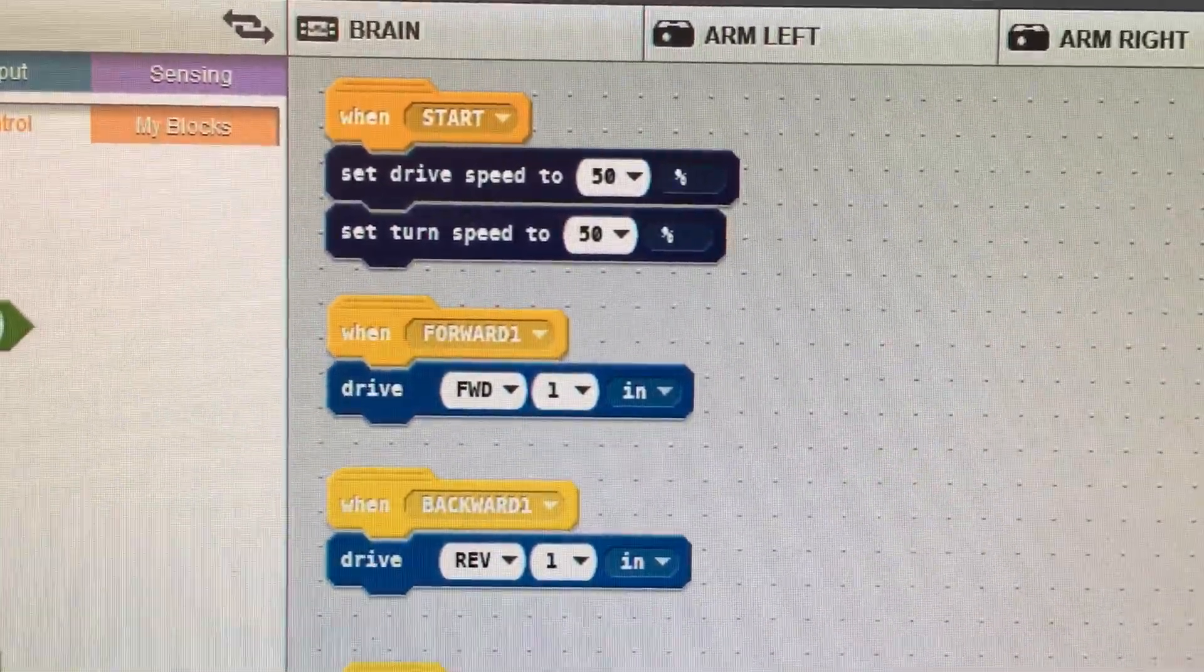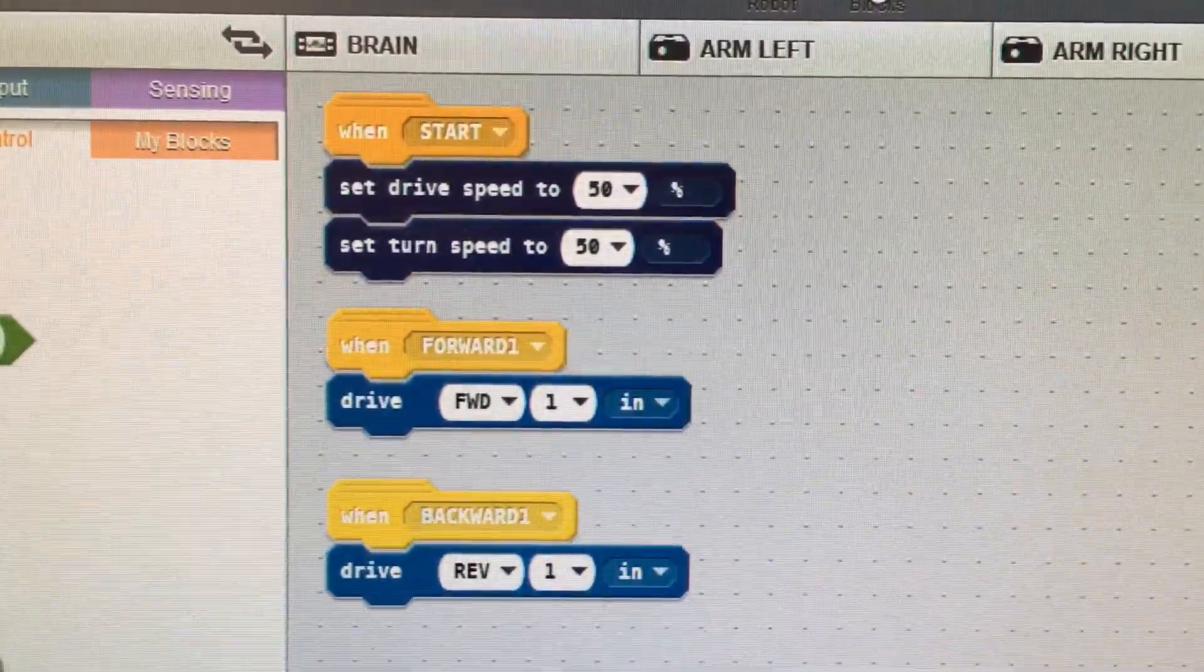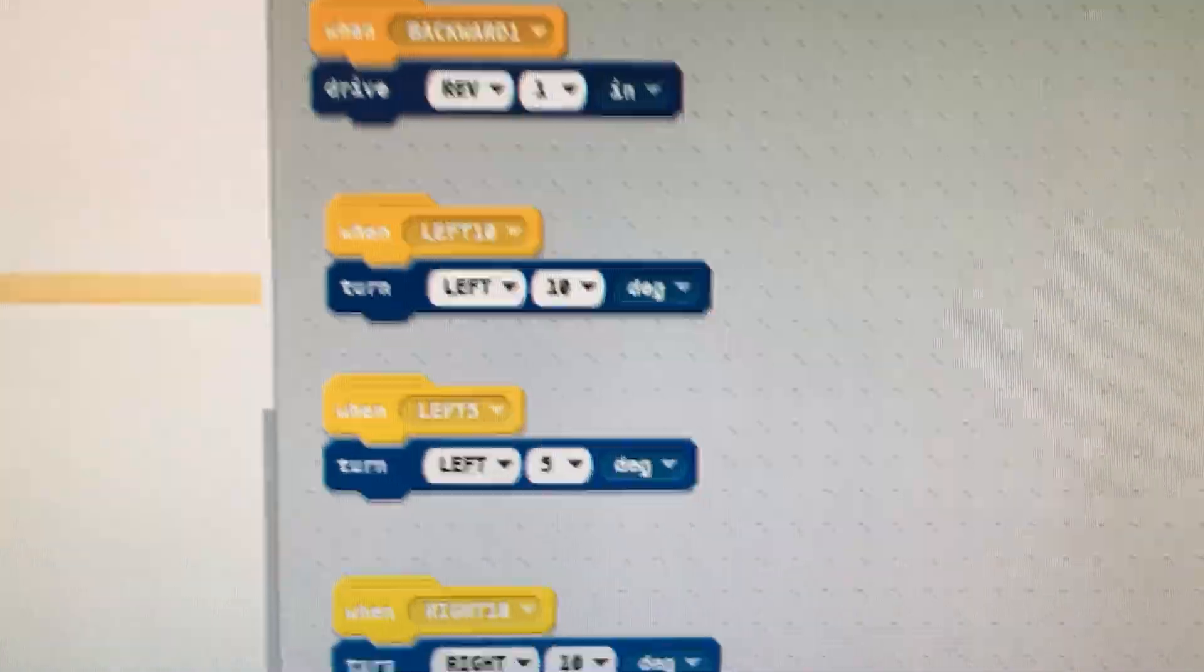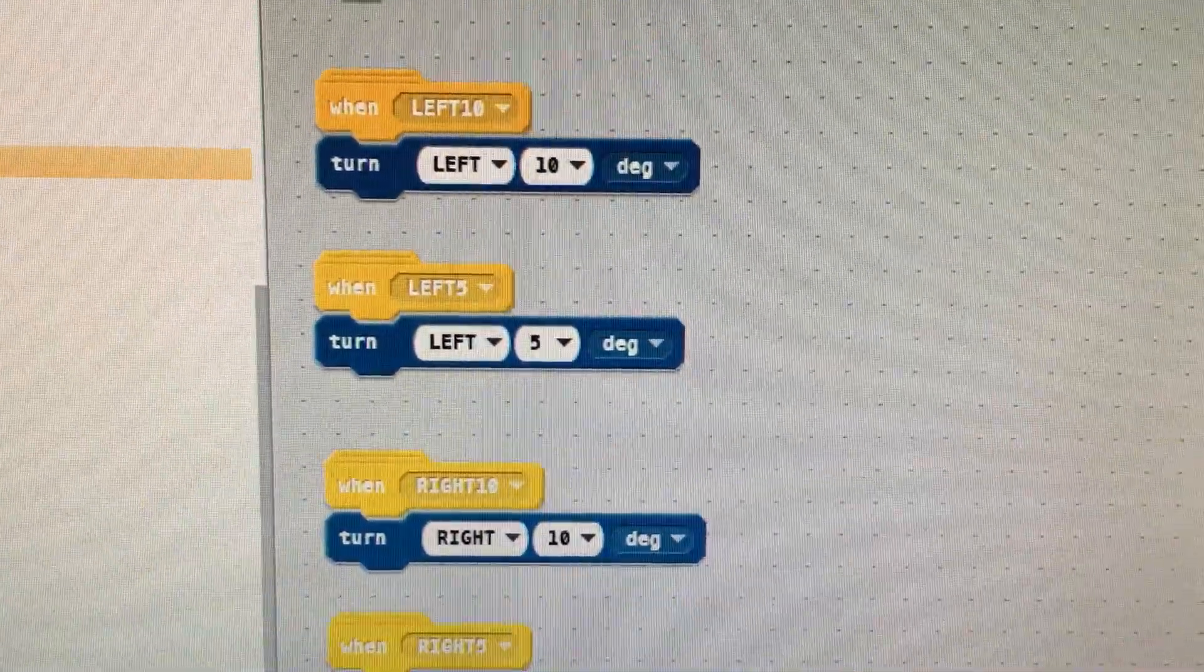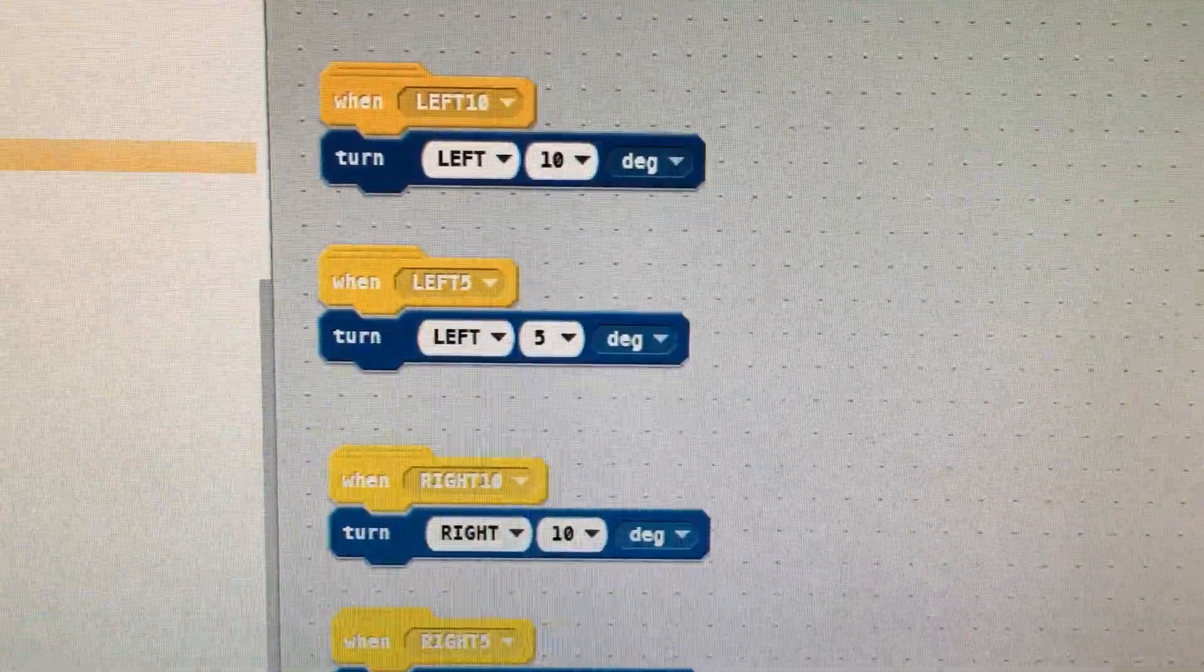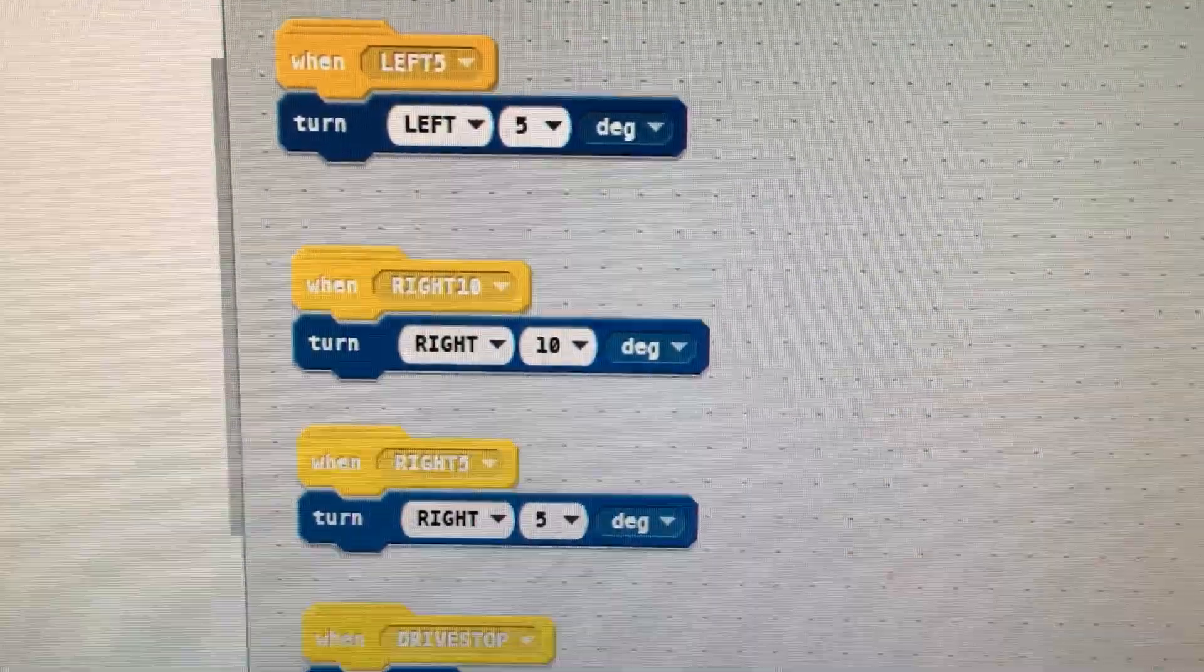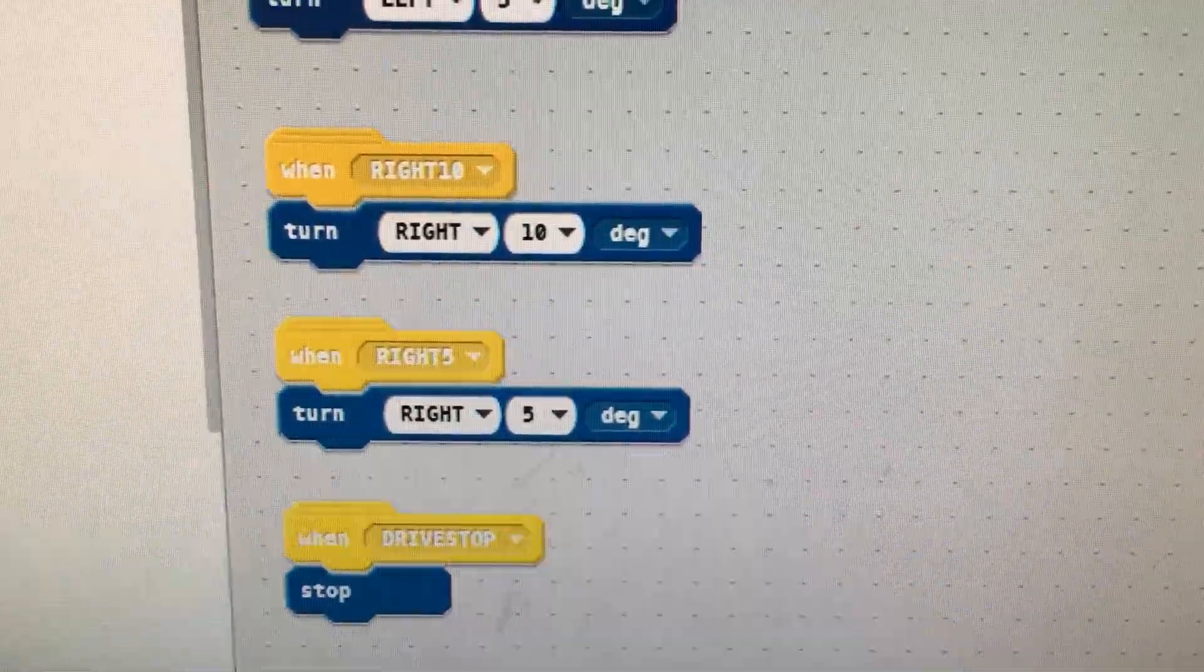Okay, when this receives the forward one broadcast from the controller, it drives forward one inch. When it receives the backward one broadcast from the controller, it drives reversed one inch. When it receives the left 10 command, it turns left 10 degrees. Left 5 is 5 degrees. Right 10 and right 5 are 10 and 5 degrees also. And then there is a drive stop command.